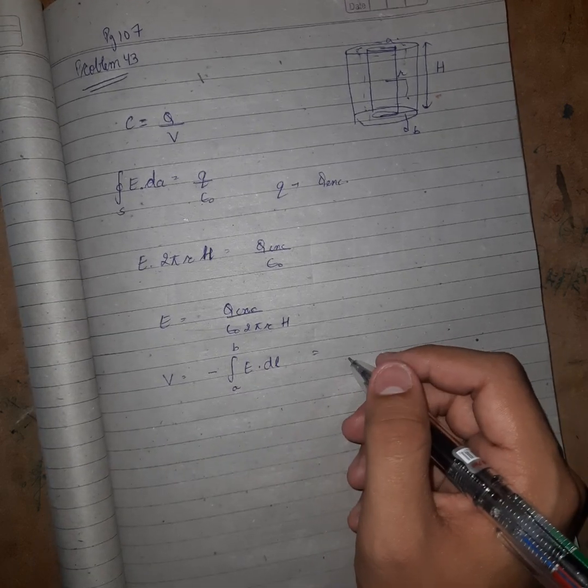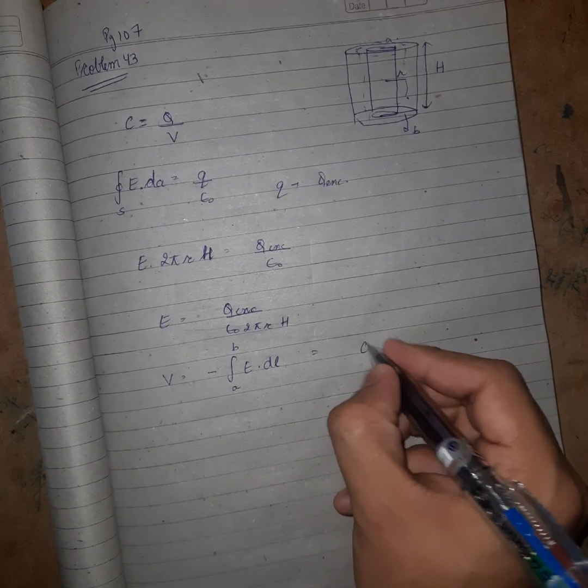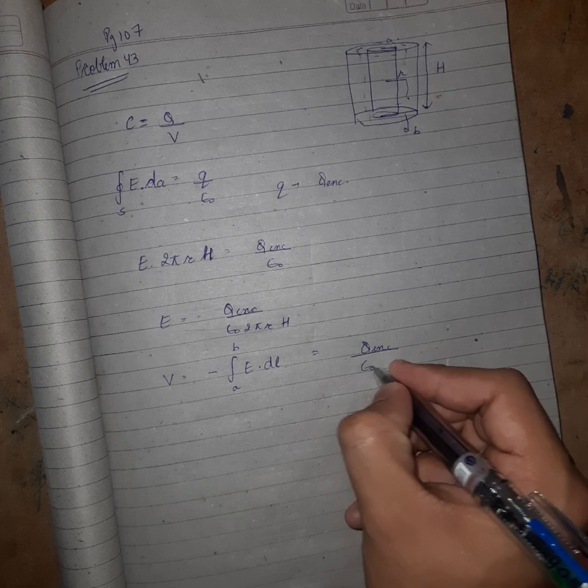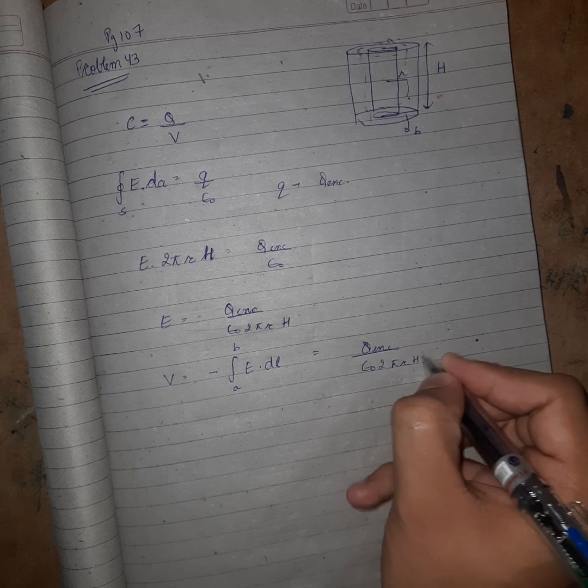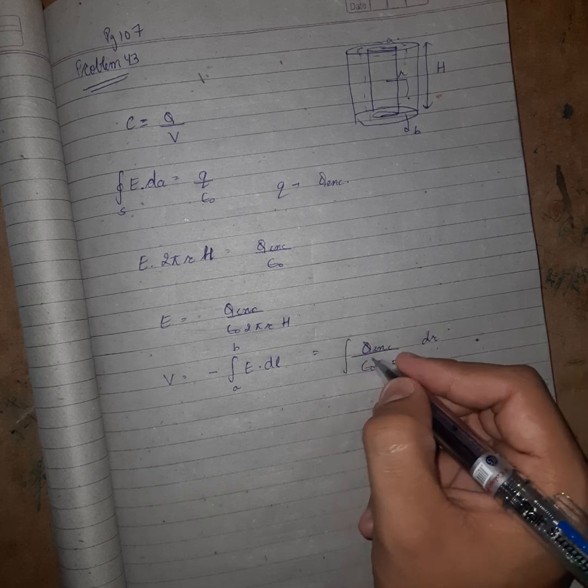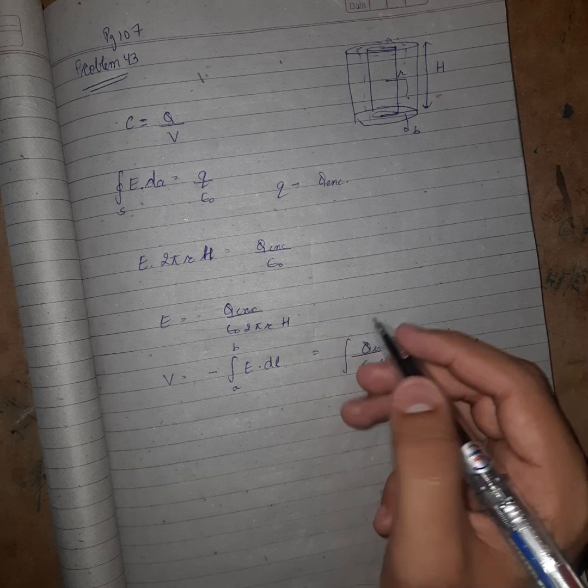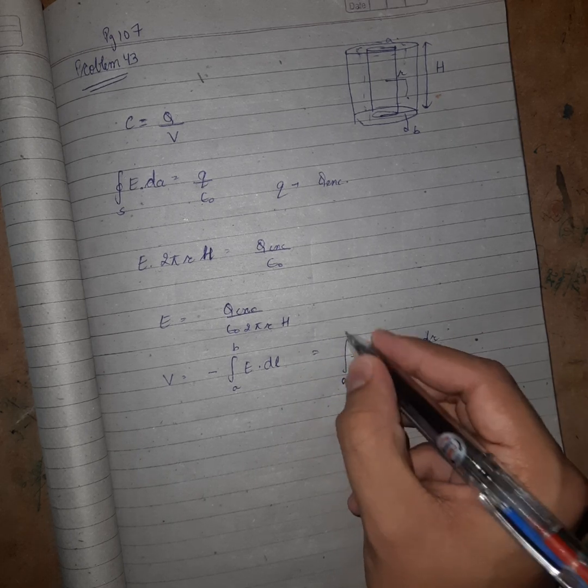So on solving further, we get Q enclosed upon ε₀ times 2πrh and dr, because we are taking the Gaussian radius as r, from a to b.